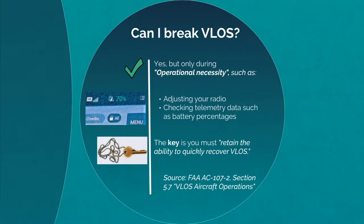VLOS can be broken, but there are rules. A break in VLOS must be due to what's called operational necessity — things like checking your radio and adjusting to a new channel, or looking down at telemetry data to check battery percentages. The key is you must retain the ability to quickly recover VLOS. Practically speaking, within moments of looking back up, you've recovered VLOS. This guidance is taken directly from FAA Advisory Circular 107-2.